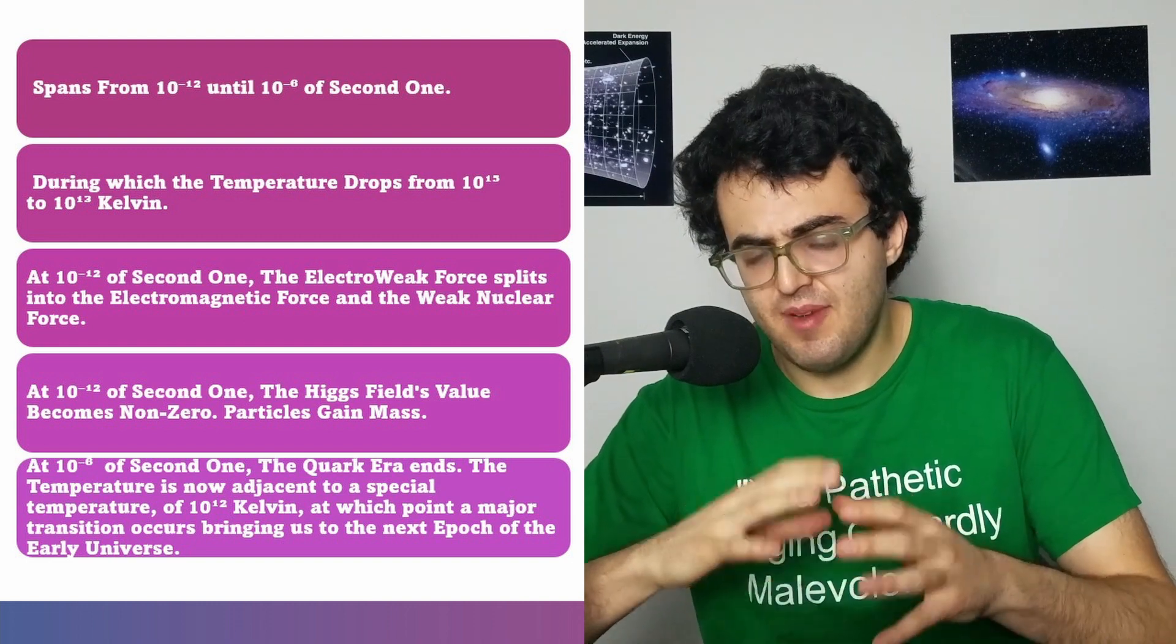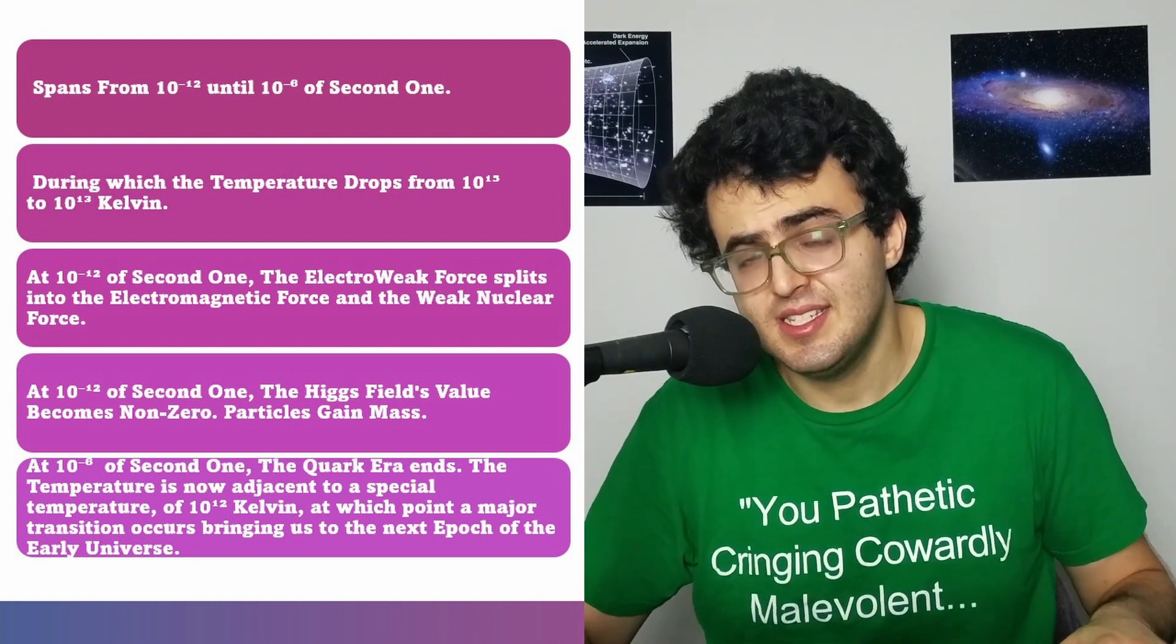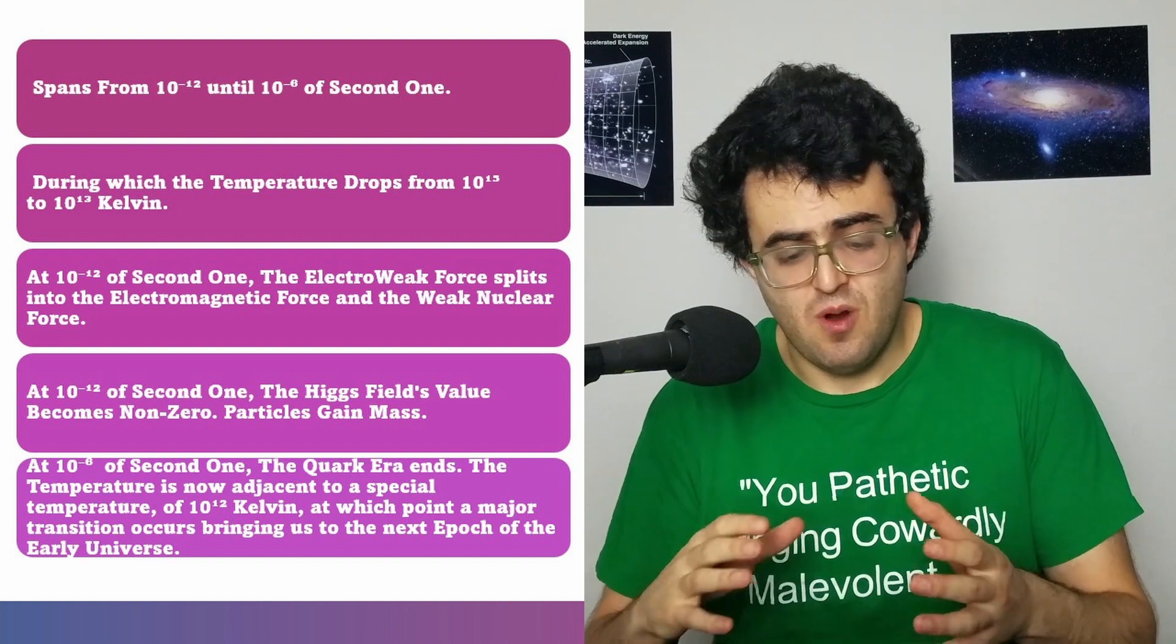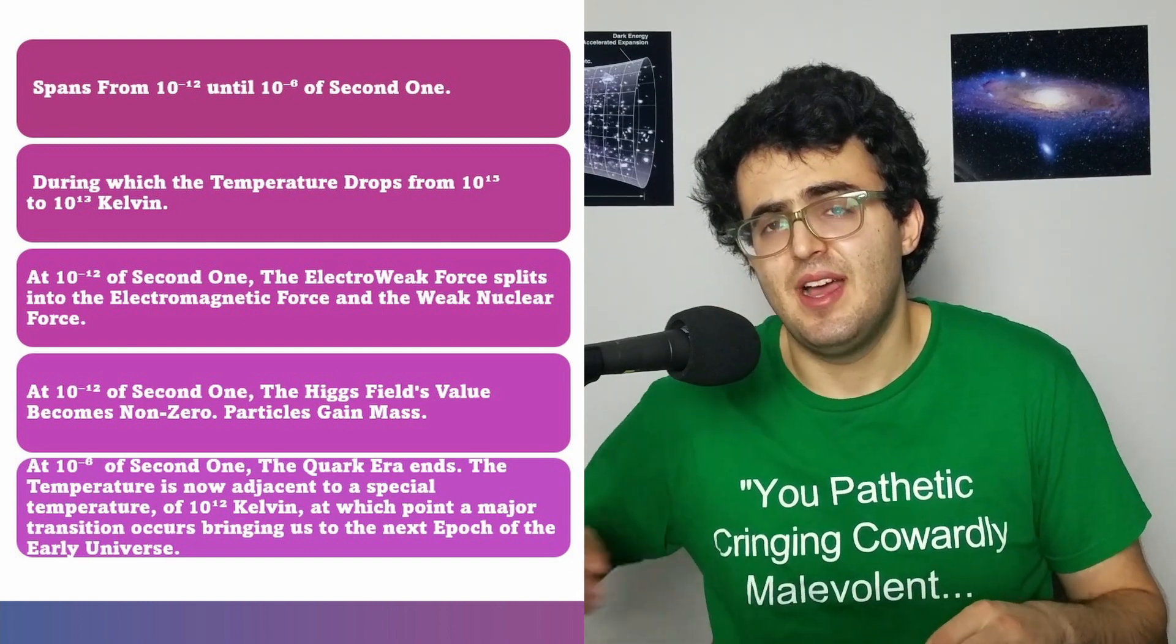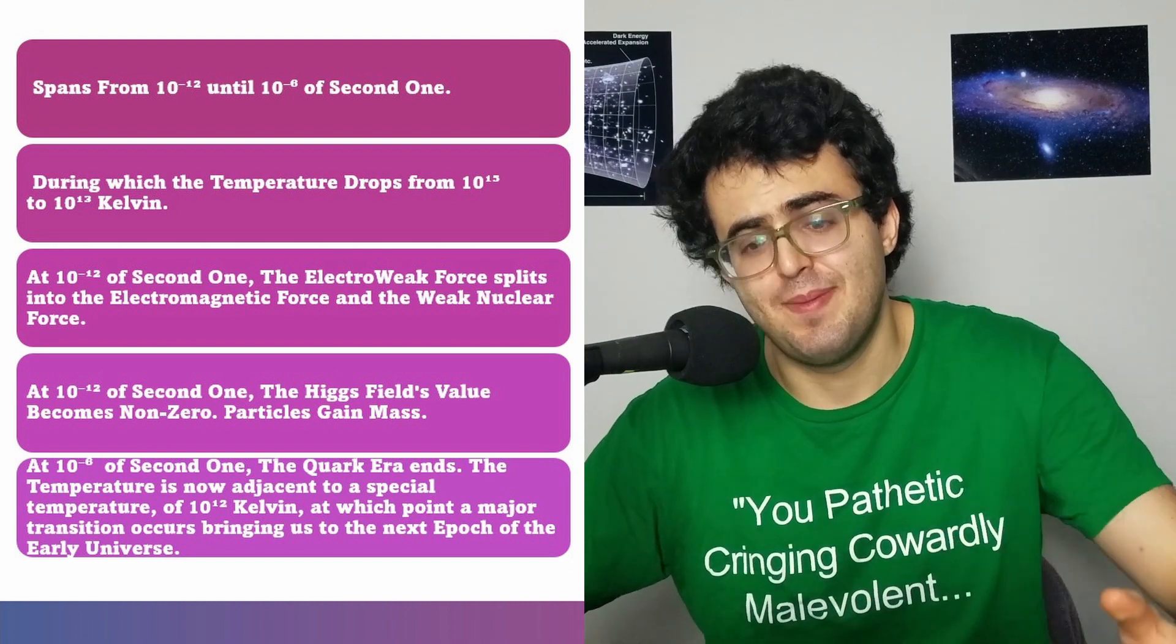So what you see throughout this period from 10 to the minus 12 until 10 to the minus 6, which is the duration of the quark epoch, is a universe filled with the quark gluon plasma that's thinning out and cooling as it expands.